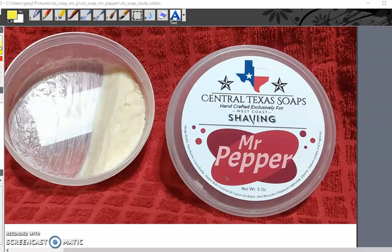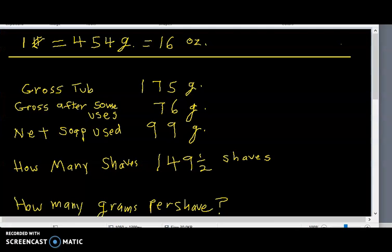Shaves were done and counted for a few months. The unused original tub's gross weight was 175 grams, and the gross weight after several shaves were done was 76 grams. So the net soap used was 99 grams.